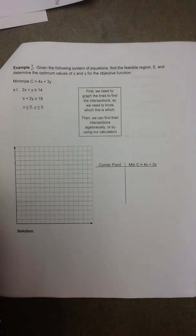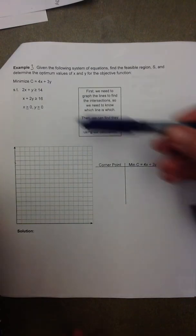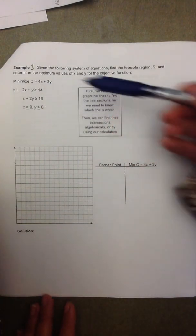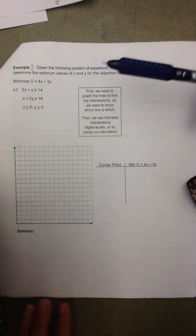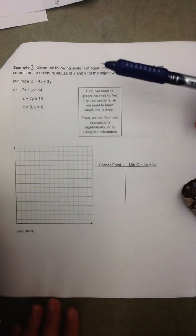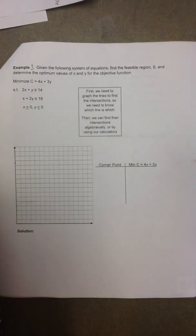So our objective function is to minimize c equals 4x plus 3y, subject to the following constraints. The way these first two constraints are written, we first need to solve them for y, or put them into slope-intercept form.